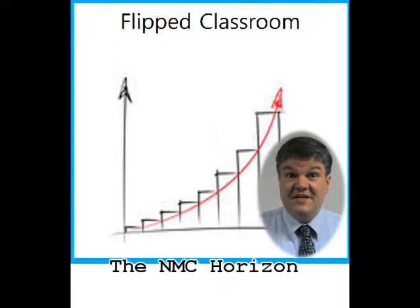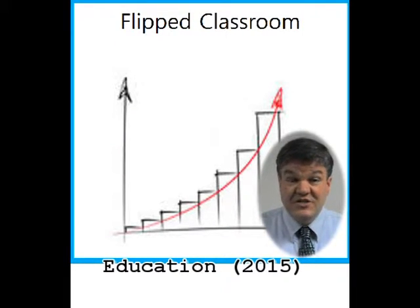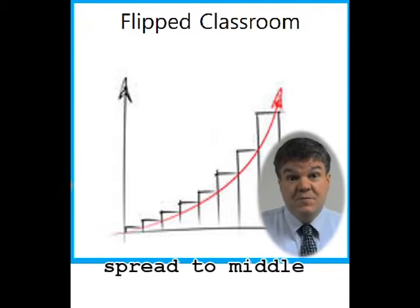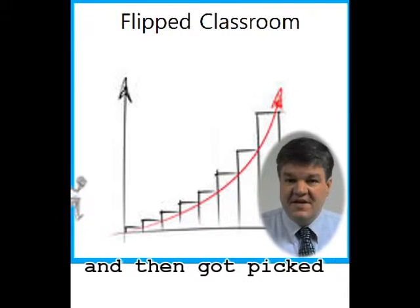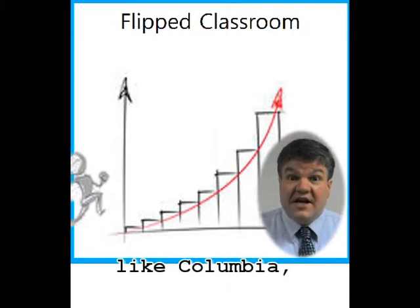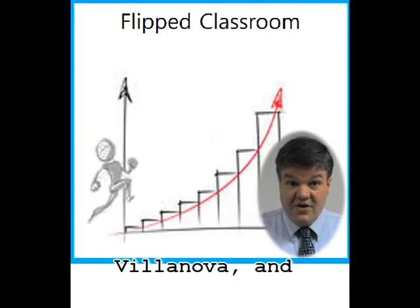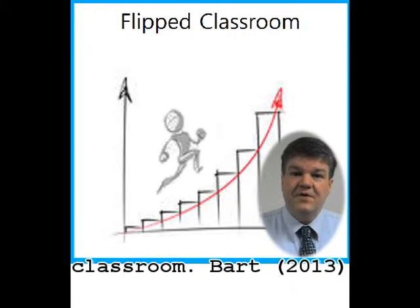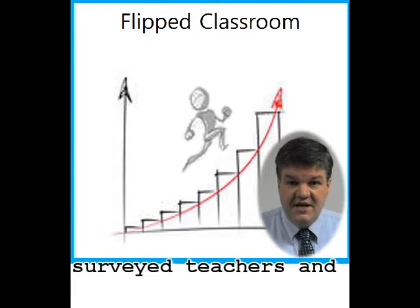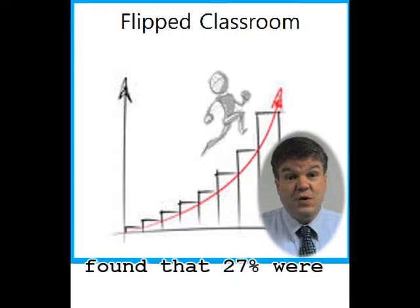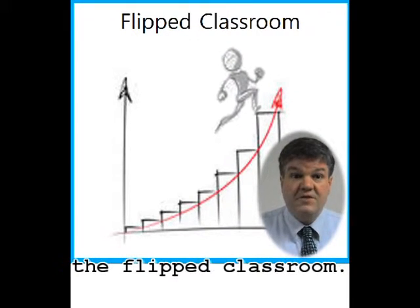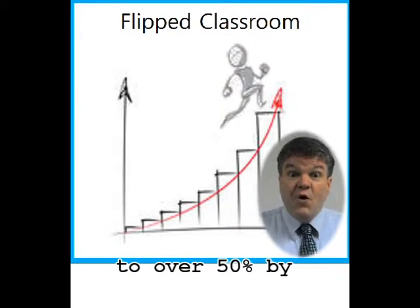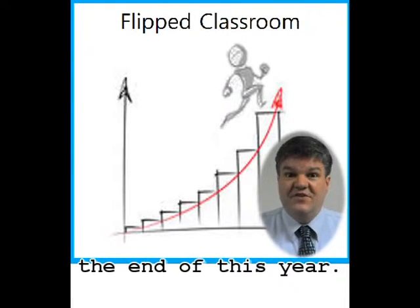The NMC Horizon Report for Higher Education in 2015 reported that the flipped classroom spread to middle schools and high schools, and then got picked up by universities like Columbia, Villanova, and Harvey Mudd, who initiated programs to use the flipped classroom. BART 2013 surveyed teachers and found that 27% were using some form of the flipped classroom, and this number was supposed to increase to over 50% by the end of that year.